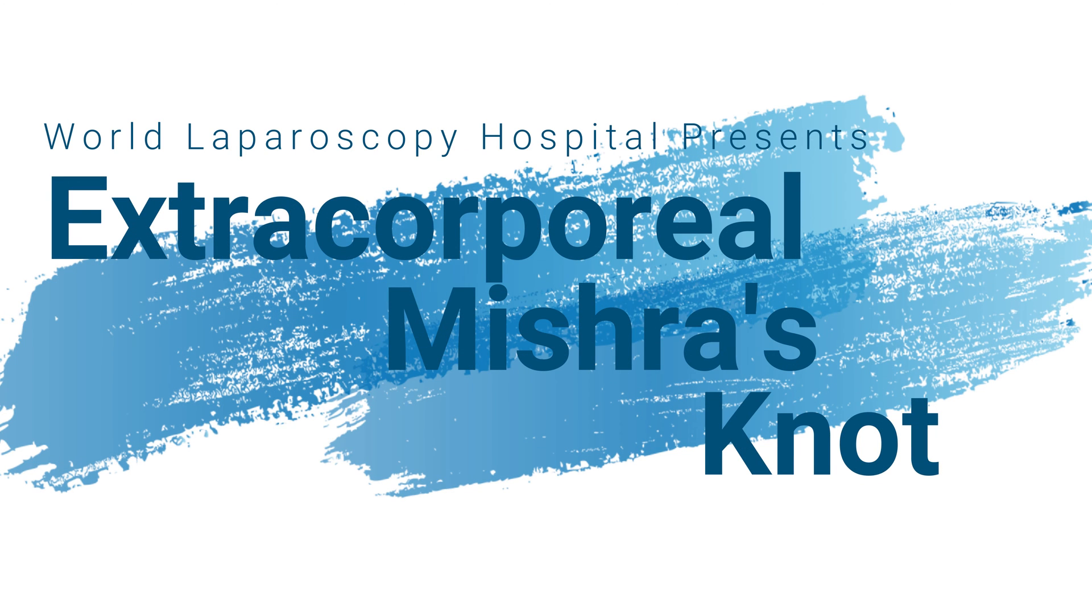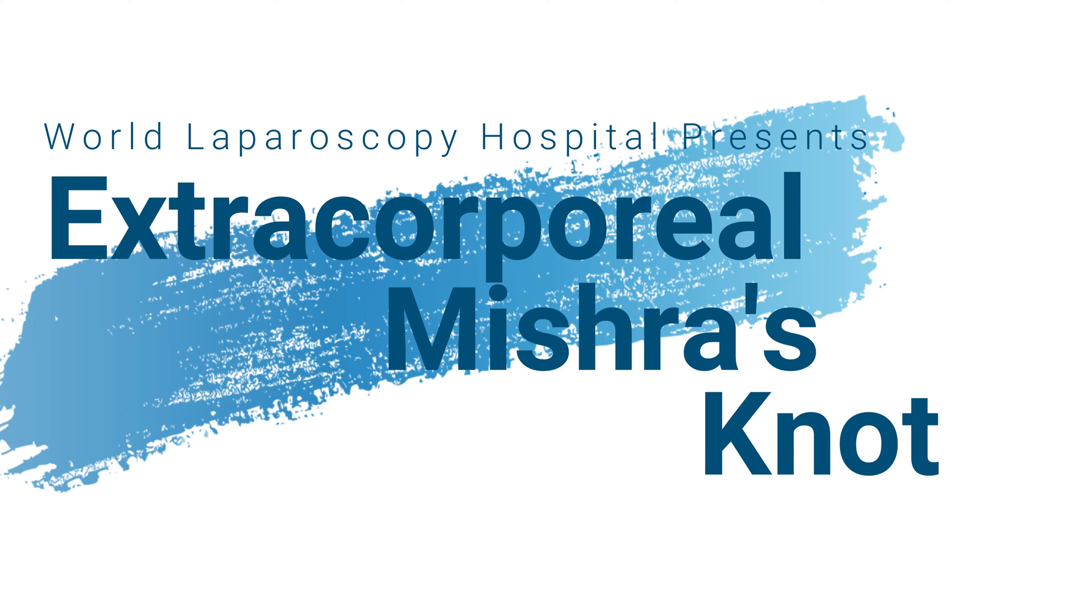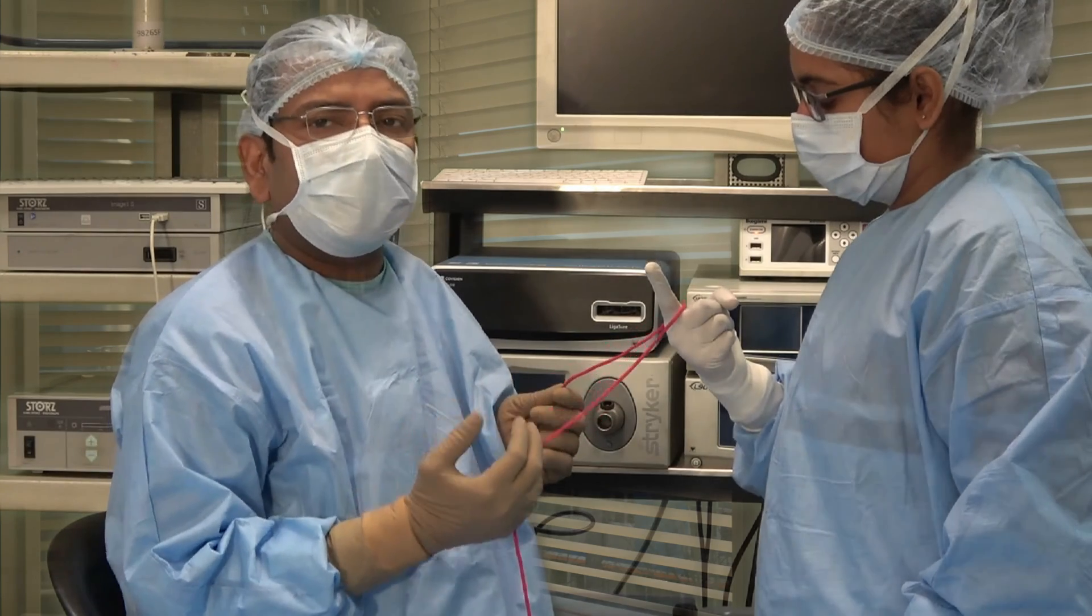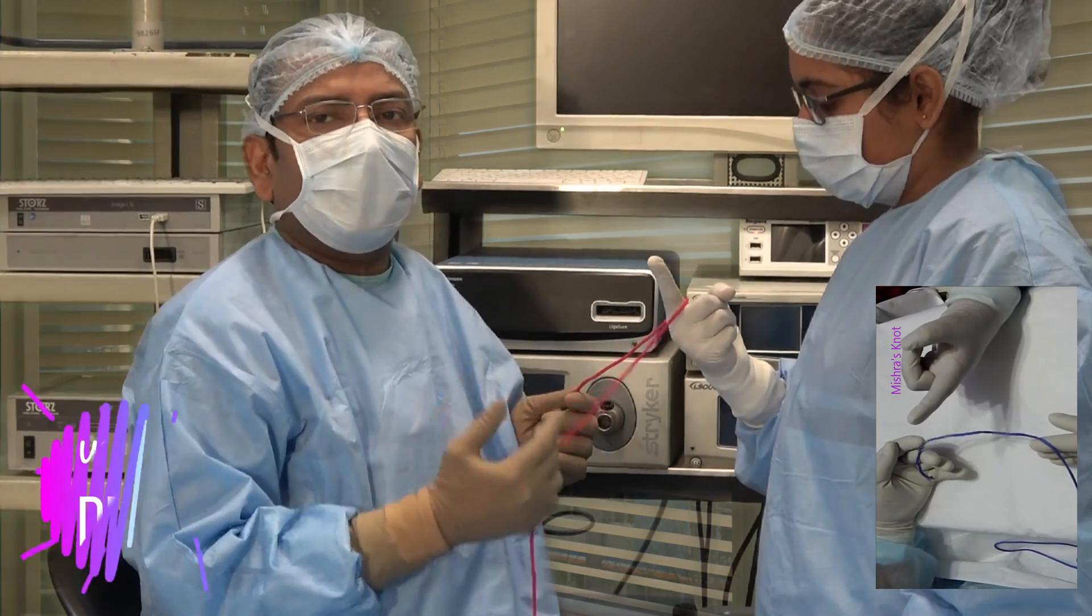Hello friends, today we are going to discuss the extracorporeal Misra's knot. This is a very good knot for tubular structures up to 18 millimeters in diameter.